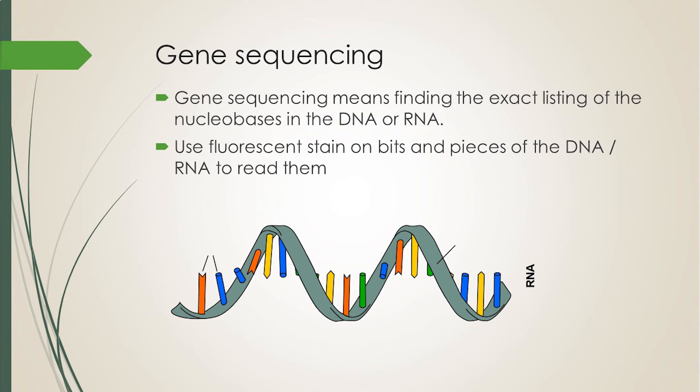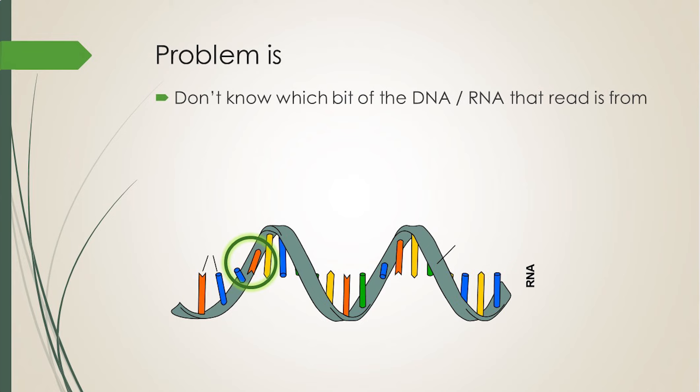The branch of biology called gene sequencing is the science of writing down the exact listing of the thousands and thousands of nucleobases in the DNA or RNA in the order they appear in the organism. The way biologists do that is to chop up the RNA or DNA into pieces and use fluorescent stain on those bits and pieces to read them. That's why each result is called a read. The problem is we don't know where on the DNA or RNA that read is from. We don't have the ability to specify, oh let's chop up from position 210 to 220 and read that. Nope, that's not possible.